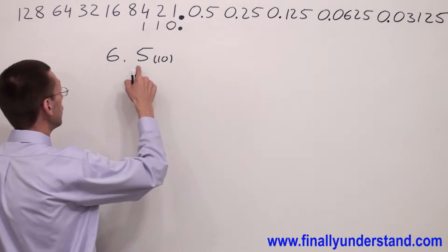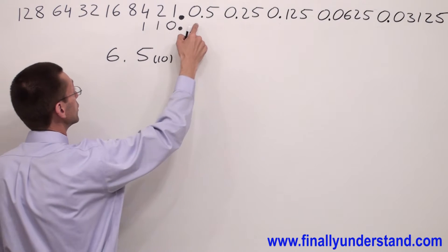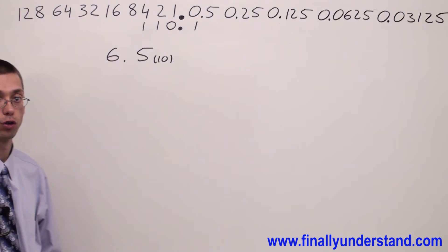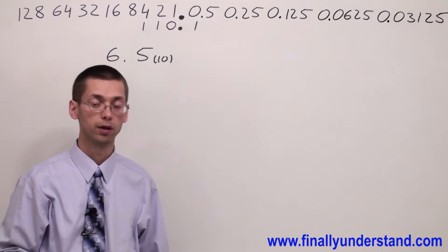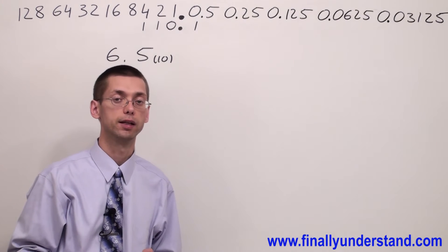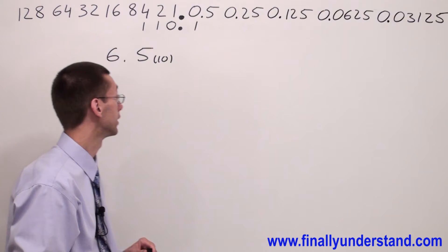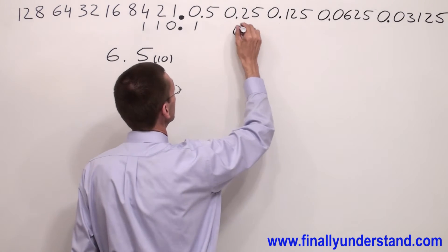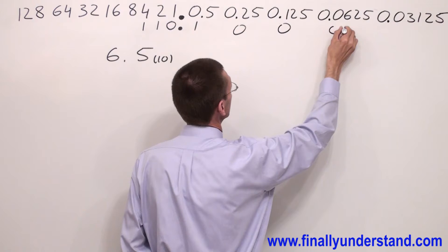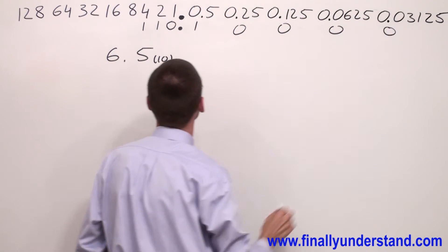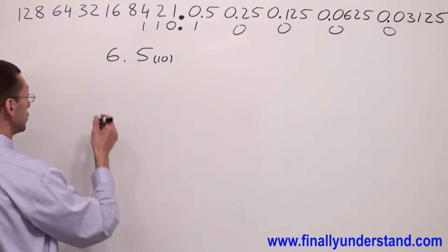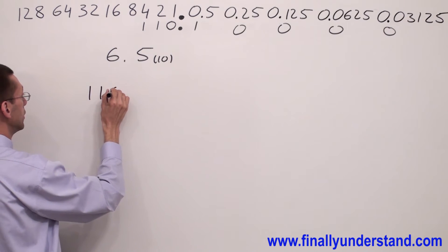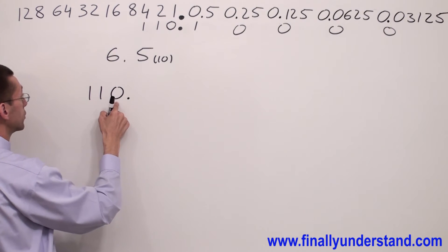And I have 0.5. That's why I'm going to write 1 over here. We're going to keep 5 binary bits after the binary point, so I'm going to fill up these spaces by 0s. And my answer is going to look like this: I have 1, 1, 0 — this is my binary 6.